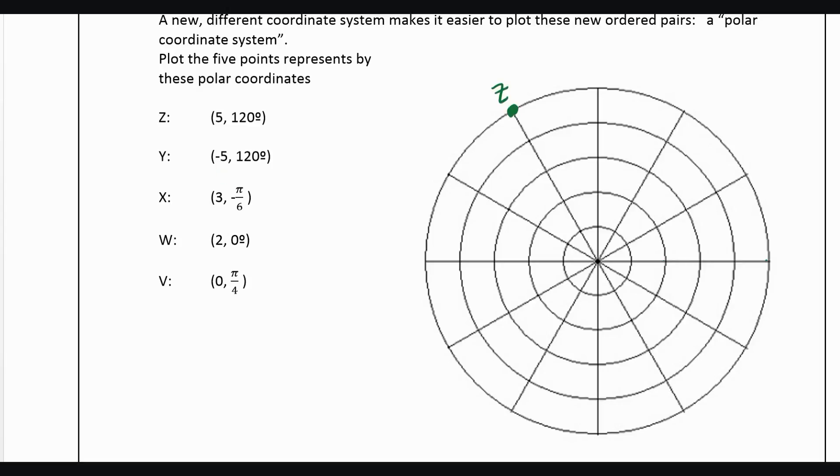Now, Y says negative 5 and then 120. So we'd go out negative 5, which would just be in the opposite direction. So we would count 5, 1, 2, 3, 4, 5. And then we'd go 120 degrees from there, which would be here.